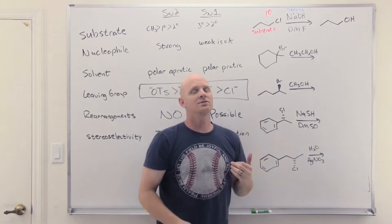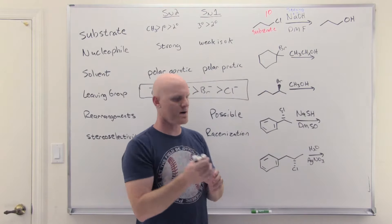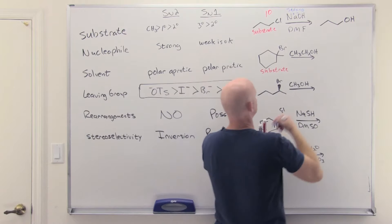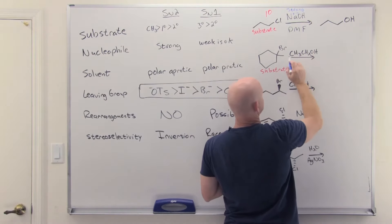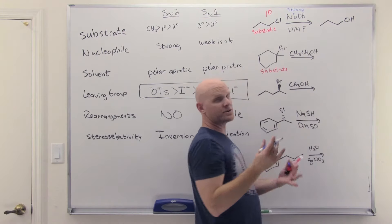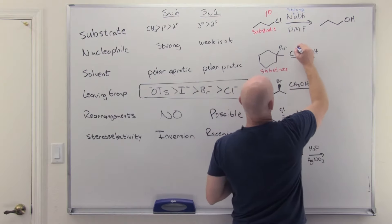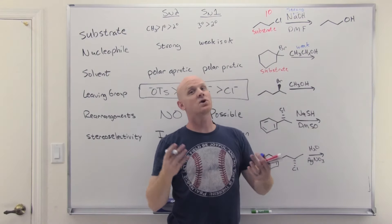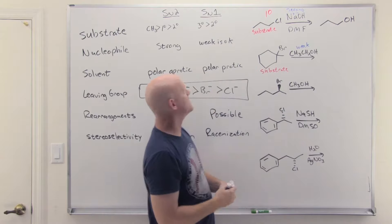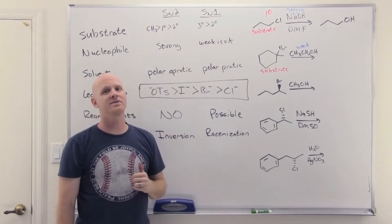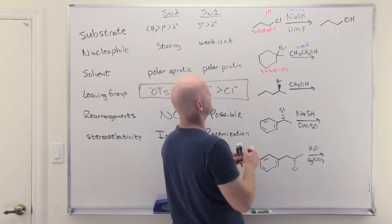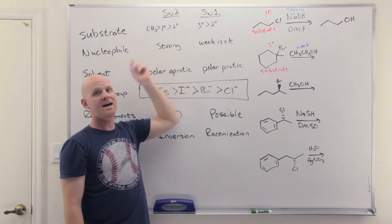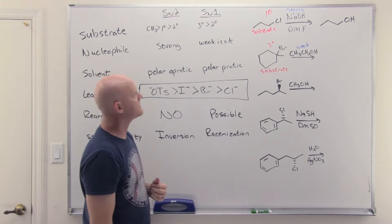Second example: the leaving group is Br, which identifies that first reactant as our substrate, making the other reactant our nucleophile. There's no negative charge — it's not an ionic hydroxide, it's just an alcohol — and it is a weak nucleophile. Since it's the only thing written, it's also our solvent; this is a solvolysis reaction. With a weak nucleophile, we definitely know we're doing SN1. Looking at our substrate, it's a tertiary halide, which is just icing on the cake — backside is completely blocked for tertiary halides.